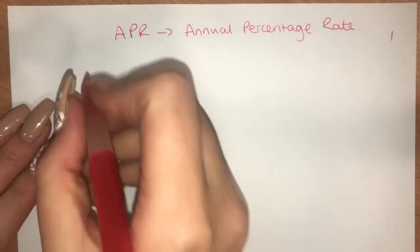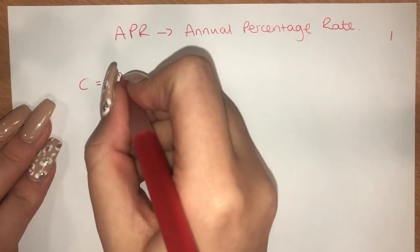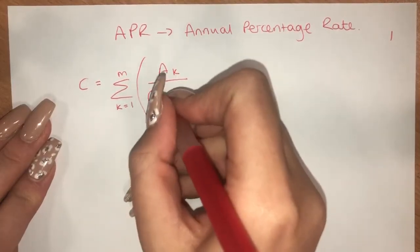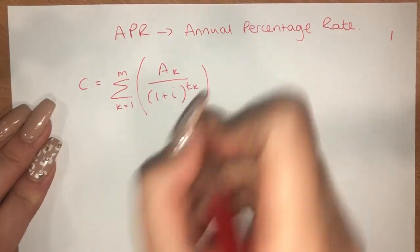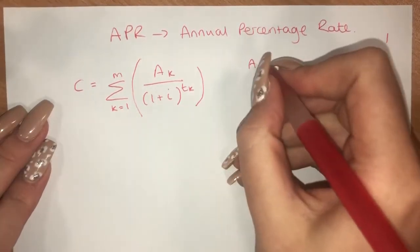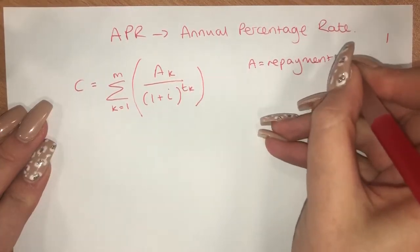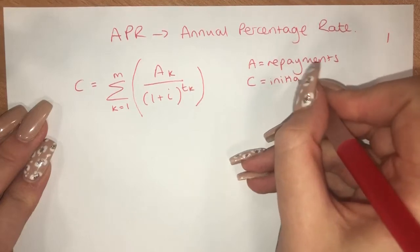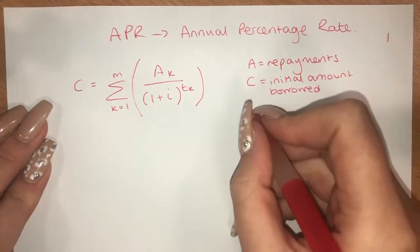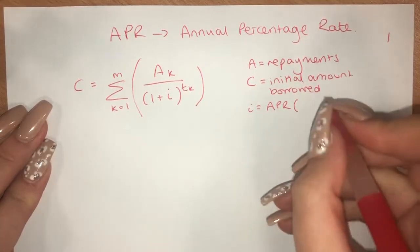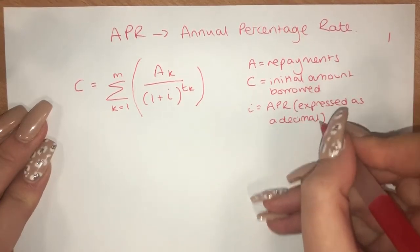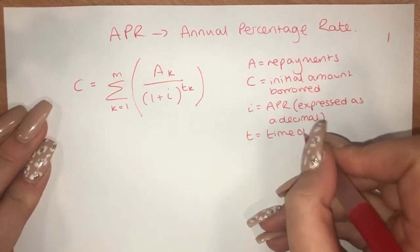Now you're given a formula in the formula book: C equals the sum from K equals 1 up to M of A_K over (1 plus i) to the power of T_K. Now this can be a really confusing formula, but let's sort out what the individual bits mean. So A always refers to any repayments which are made. C is the initial amount borrowed, or the cost of the loan. I is the APR and that must be expressed as a decimal. And T is the time of the repayment in years.